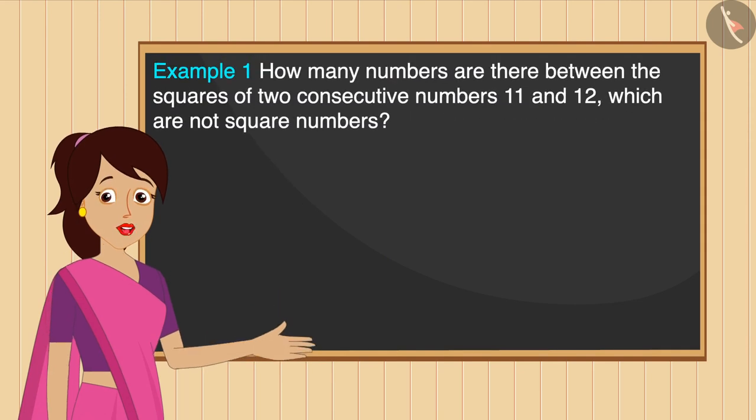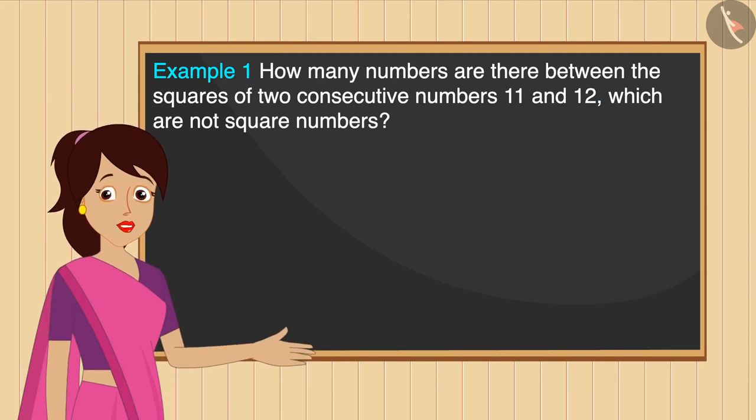If I ask how many numbers are there between the squares of two consecutive numbers 11 and 12, which are not square numbers? So how will you solve this? You can pause the video and think about your answer.